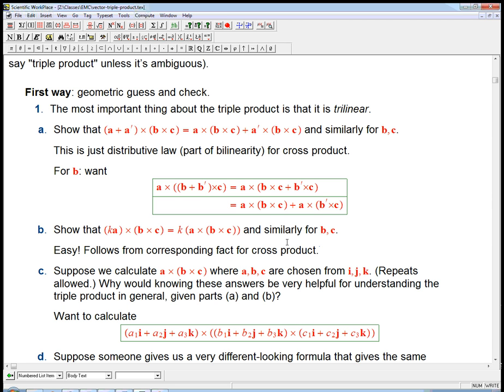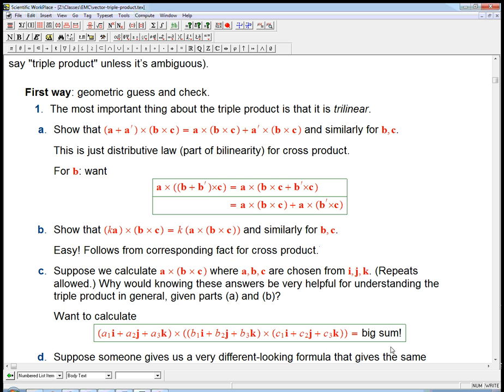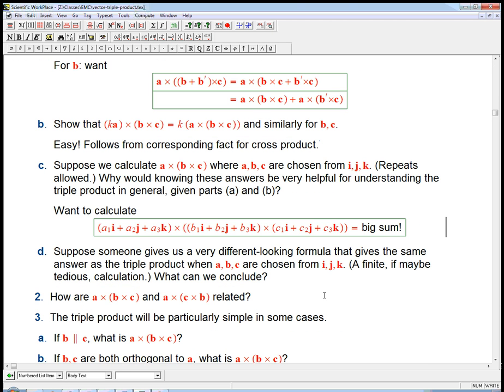Well, if I write it out this way, what I can do is I can just use those distributivity laws, in other words, use the trilinearity, to pop it out as just various coefficients, like a1, b1, c1 times i cross i cross i. Or a2, b1, c3 times j cross i cross k. So that's going to be just a big sum. In other words, knowing just the basis examples gives me the general. And that's the incredibly important fact about multilinearity. It says that if you understand just what happens for the basis vectors, you understand the thing completely in principle.